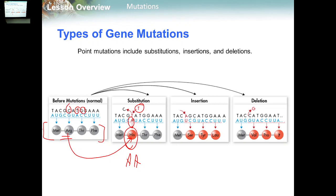The substitution mutation typically causes only one amino acid change. Sometimes there is no effect at all, because some mutations produce another codon for the same amino acid.